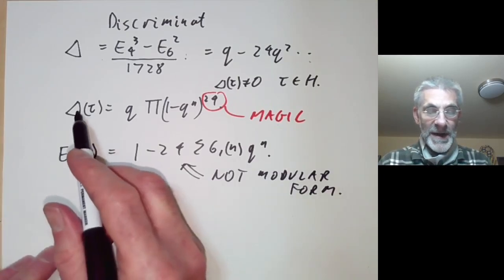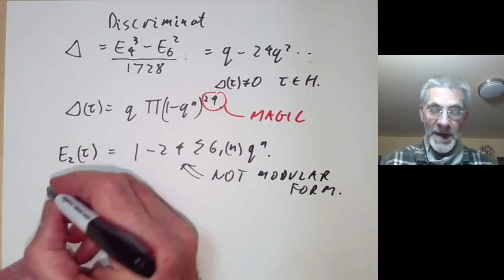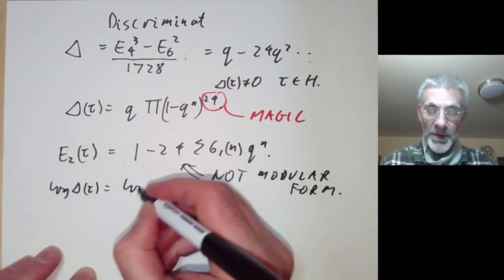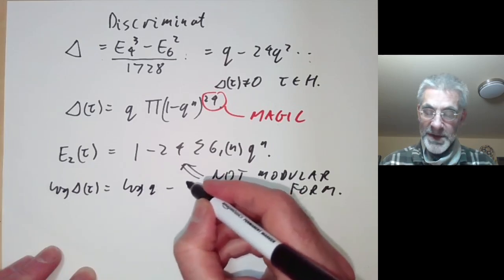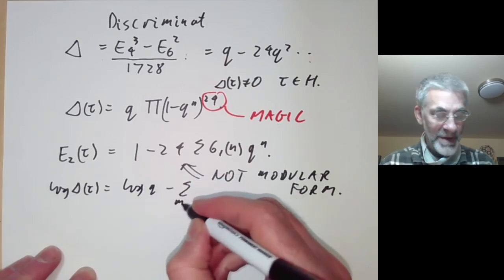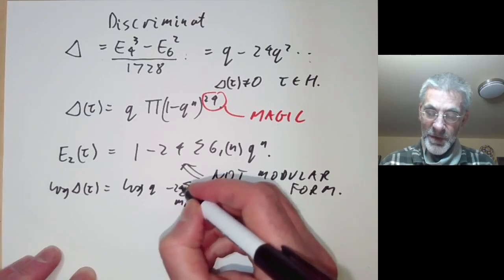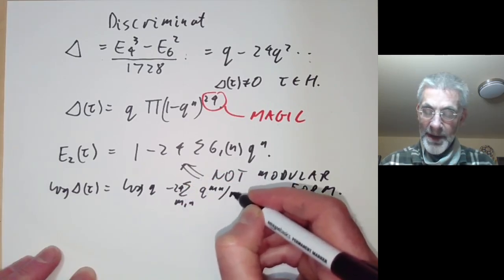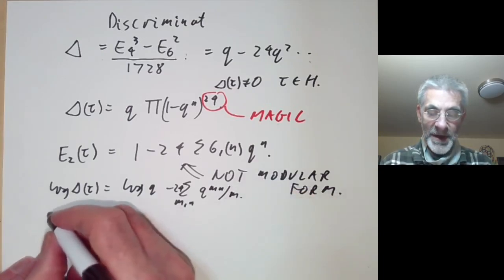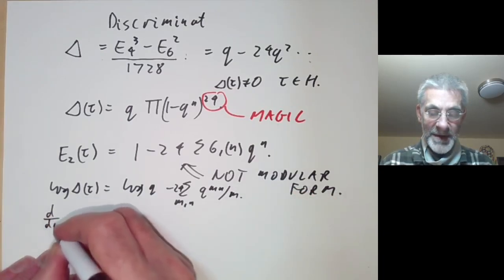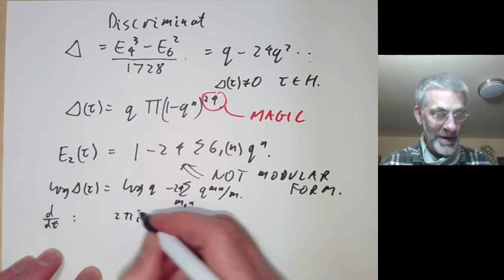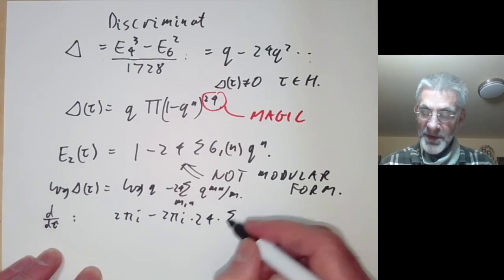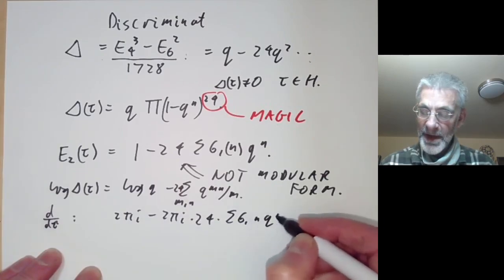The reason E2 is related to the delta function is: if you take the logarithm of Δ(τ), this equals the logarithm of q minus the sum over m and n, with a factor of 24, of q to the mn over m. If you differentiate this with respect to τ, we get 2πi minus 2πi times 24 times the sum of σ₁(n) q to the n.